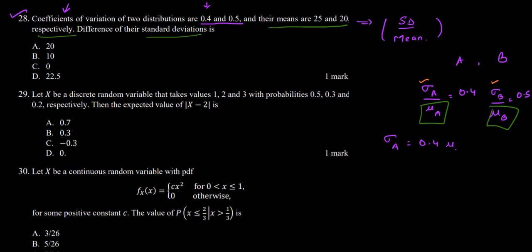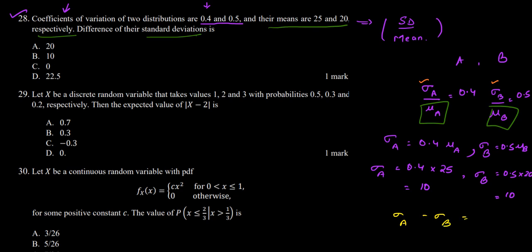We can easily find this by multiplying: Sigma_A = 0.4 × mu_A = 0.4 × 25 = 10, and Sigma_B = 0.5 × mu_B = 0.5 × 20 = 10. So the difference Sigma_A minus Sigma_B = 10 − 10 = 0. The difference between the standard deviations of the two distributions is 0. Option C is the correct answer.